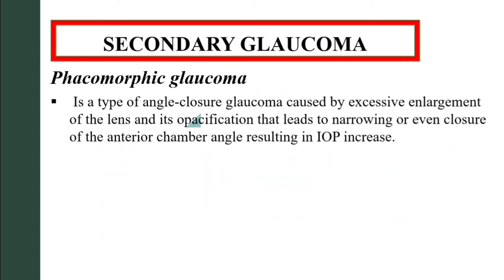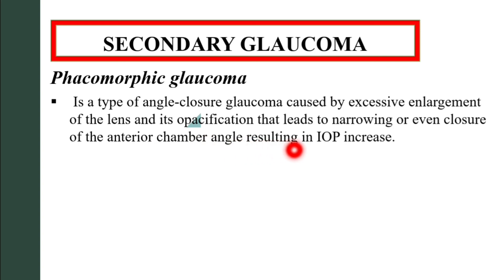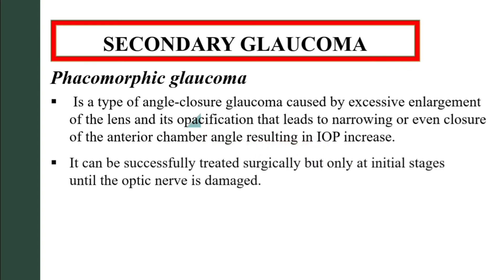Phacomorphic glaucoma is a type of angle-closure glaucoma caused by excessive enlargement of the lens and its opacification, leading to narrowing or even closure of the anterior chamber angle, resulting in intraocular pressure increase. It can be successfully treated surgically, but only at initial stages before the optic nerve is damaged.